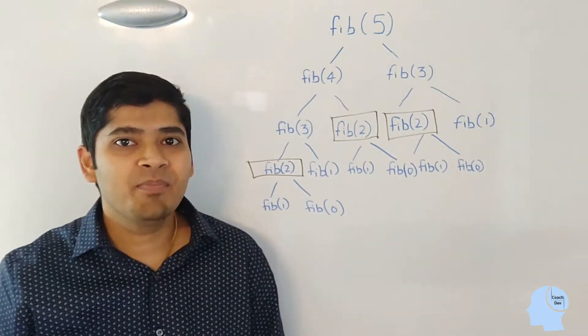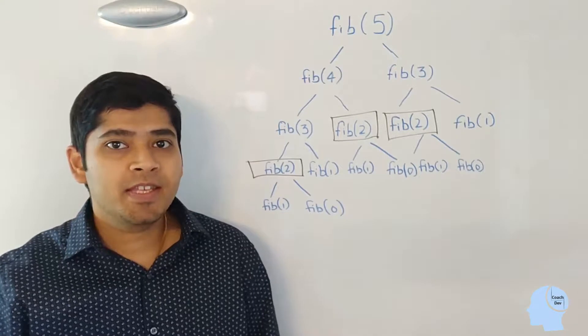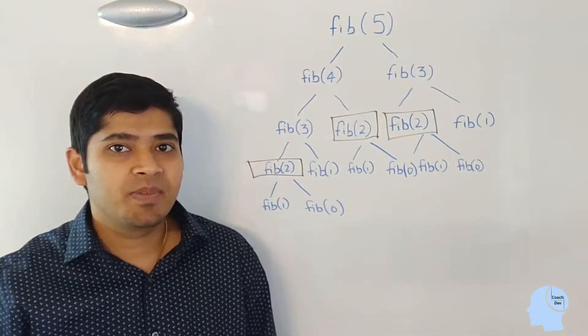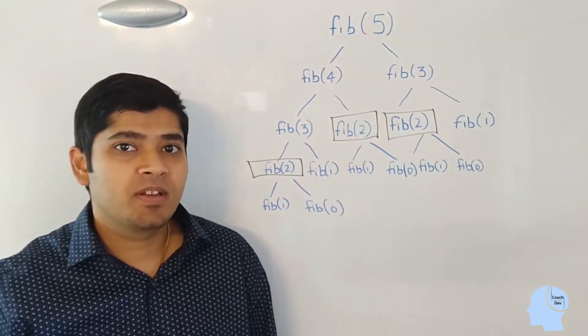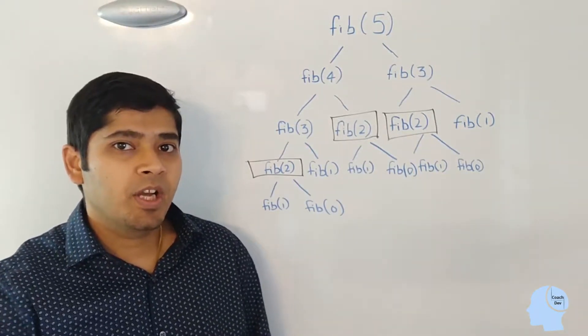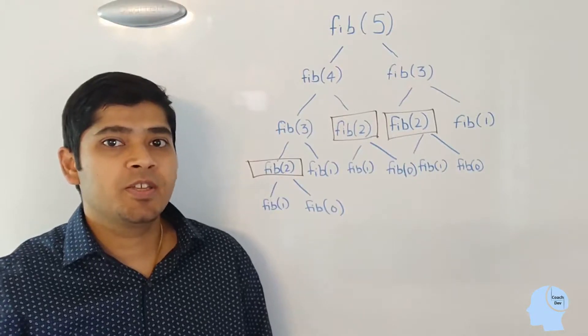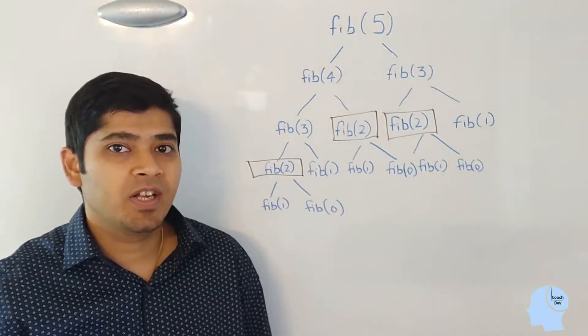Notice, for example, Fib2. It's computed three times just the same value. The result is not going to change. It's going to be the same result every time. But the computer has to process it, has to compute it three different times.